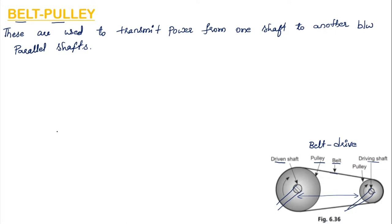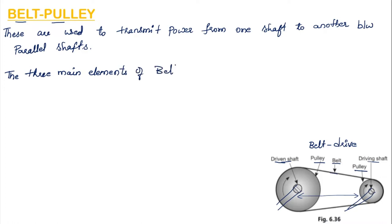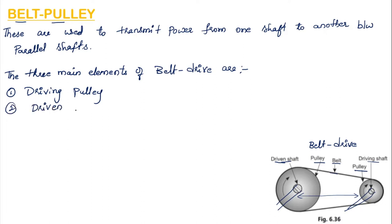The three main elements of the belt drive are: first, the driving pulley, which is mounted on the driving shaft; second, the driven pulley, which is mounted on the driven shaft; and third, the belt.